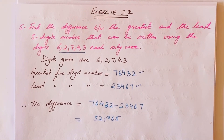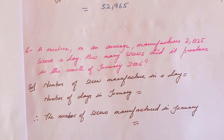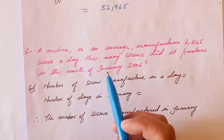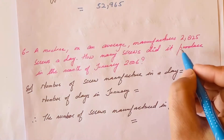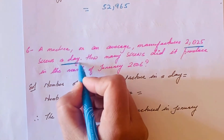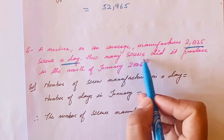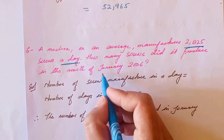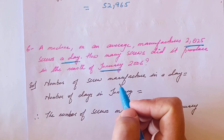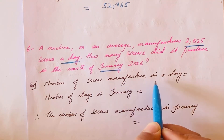Moving on to question number six: a machine on average manufactures 2,825 screws in one day. We have to find how many screws it produced in the month of January.